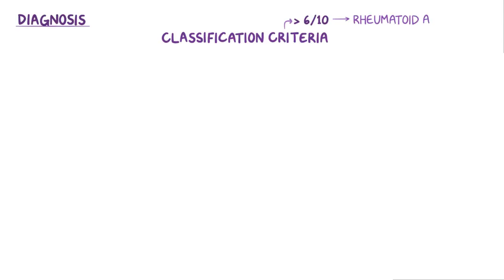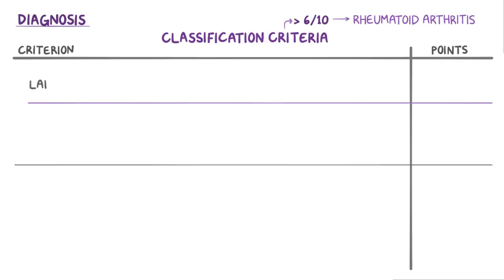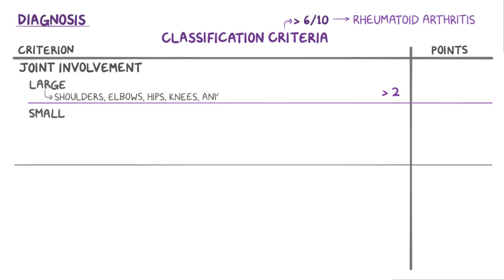In 2010, classification criteria were proposed, which established a ten-point scale, where getting at least six points out of ten supported the diagnosis of rheumatoid arthritis. The first criterion gives points for either large joint or small joint involvement, whichever gets the higher point amount. If at least two large joints from among the shoulders, elbows, hips, knees, and ankles are affected, that gives one point.